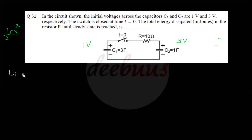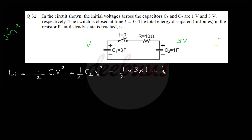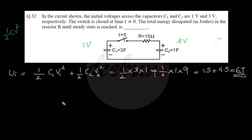Substituting values: C1 equals 3 F, V1 equals 1 V; C2 equals 1 F, V2 equals 3 V. So U_initial equals (1/2)(3)(1²) plus (1/2)(1)(3²) equals 1.5 plus 4.5 equals 6 joules.